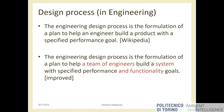Going back to the definition: Wikipedia says a design process is the formulation of a plan to help an engineer build a product with a specific goal, a performance goal or other types of goals. It's the plan for achieving the result. I reformulated this definition to be more in line with our specific course, where it's not helping a single engineer but a team of engineers, because professional designing is seldom a one-person job.